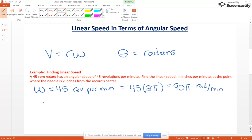Now find the linear speed in inches per minute at the point where the needle is 2 inches from the record center. So R is 2 inches. And so our linear speed velocity, which is R times omega again, is 2 times 90 pi. So the exact answer is 180 pi inches per minute.